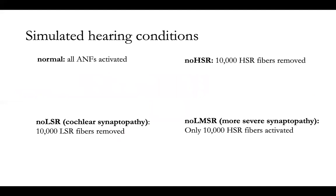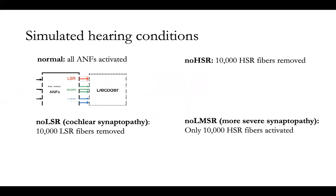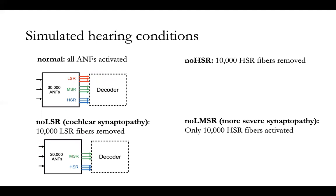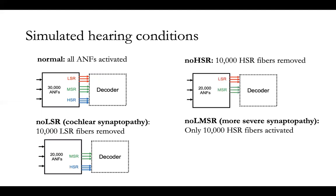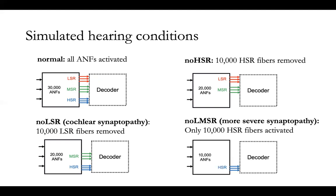Under the encoder bit, we simulate four hearing conditions: normal, in which all auditory nerve fibers are activated; no low spontaneous rate, which removes all low spontaneous rate fibers to simulate cochlear synaptopathy; a condition where we remove all high spontaneous rate fibers as a contrast to synaptopathy; and a last condition removing both low and median spontaneous rate fibers to create a more severe case of synaptopathy.